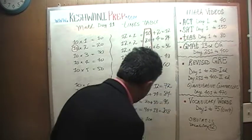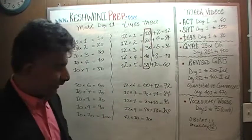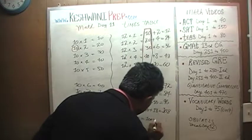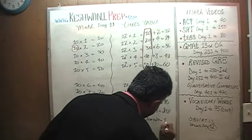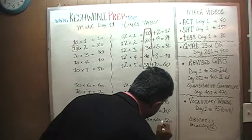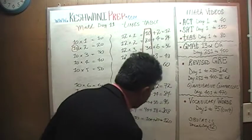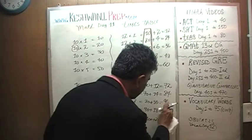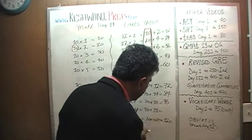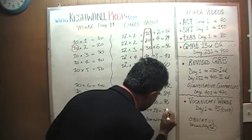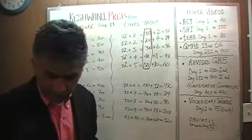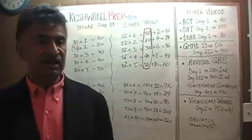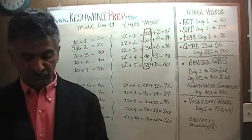And finally, 12 tens are going to be 10 tens and two more tens, giving 120. I'm going to rewrite 108 so that it does not look quite as hideous as it did before.